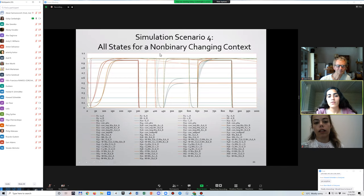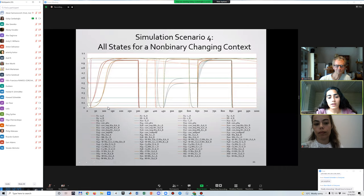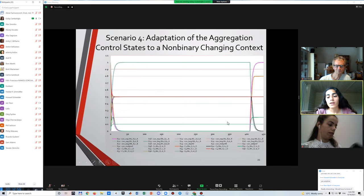And our last scenario is again on the changing context scenario. But for this time, we use non-binary values for context states. Like in this second scenario, we have non-binary context values. And therefore, our combination functions are different and our learning levels are different. But the idea is same. After 400, the context is changed. Therefore, the combination functions are also changed.